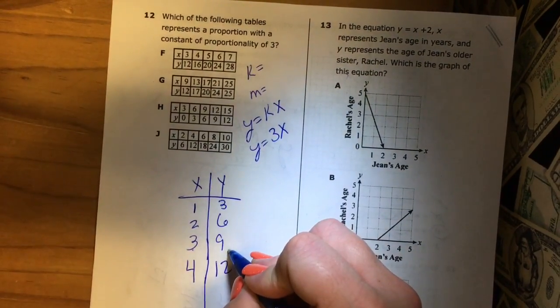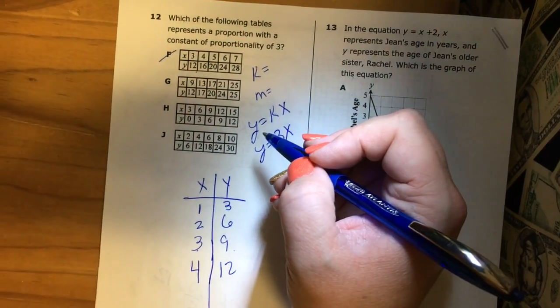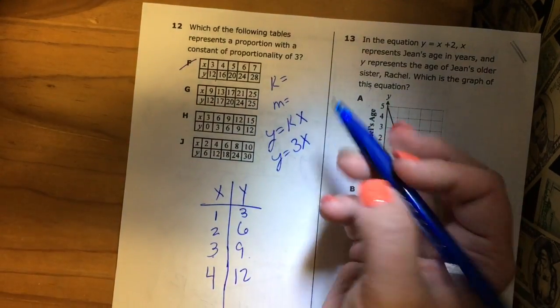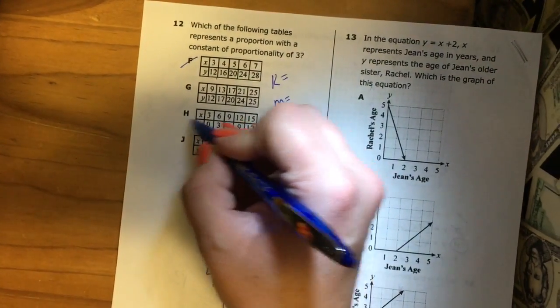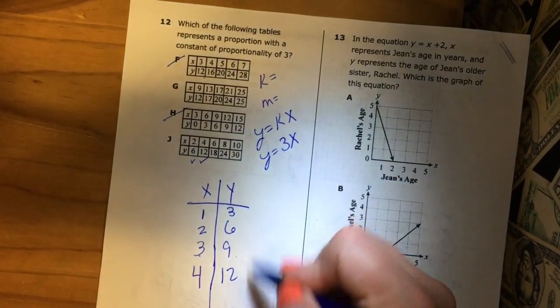Well at 3 I have 9, this has 12, so it won't be F. At 4, well this one doesn't have any of them yet. 3 is not gonna be 0, that doesn't match. 2 and 6 matches, 4 and 12 matches, so it could be J.